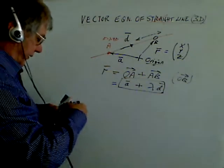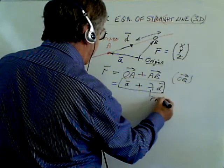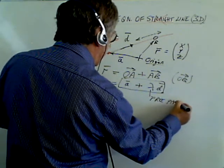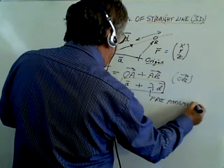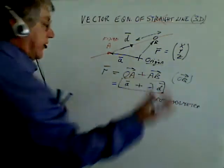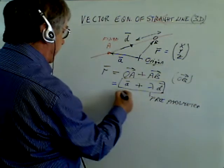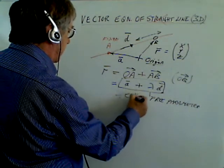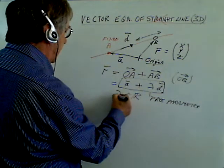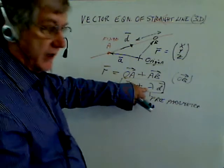This lambda is called a free parameter. And as we vary the value, it's just a scalar quantity. To be precise, lambda is a real quantity, any value at all, minus infinity to plus infinity.